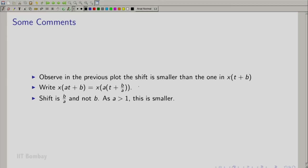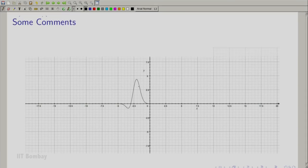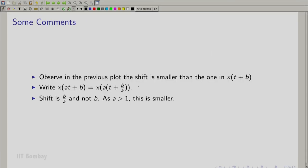So, we explain that by writing x(at + b) as x(a(t + b/a)). So, a is non-zero and a is greater than 1. So, as a is greater than 1, b/a will be smaller than b and the shift observed will be b/a and not b. As a result, the shift observed in this graph is lesser as compared to the shift observed in the previous graph.